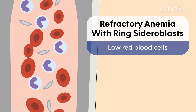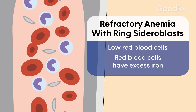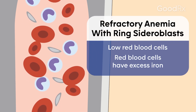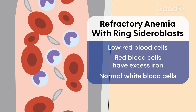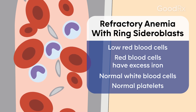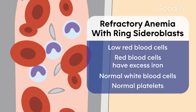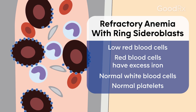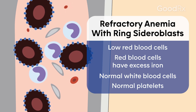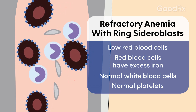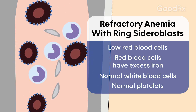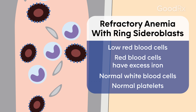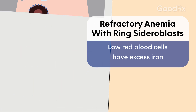Another type is refractory anemia with ring sideroblasts. This is when there is an increase in ring sideroblasts, which are abnormal cancer-like cells that have a lot of iron and look interesting under the microscope.